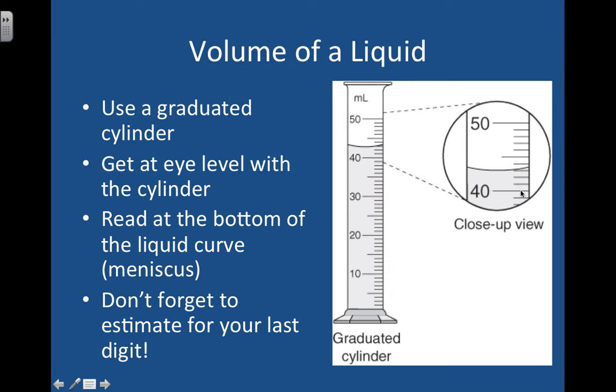Okay, I got 43.0. Now, why is it 43.0 and not just 43? It's because the lines go to the nearest one milliliter. And I think it's right on the line, so my estimated digit goes to the tenth, and it's going to be zero. So 43.0 milliliters.